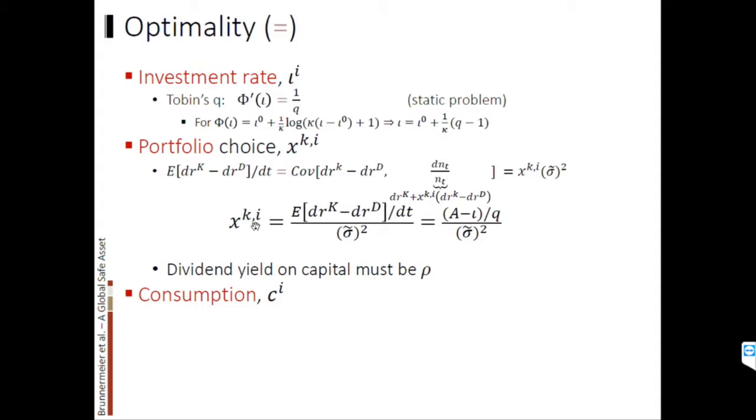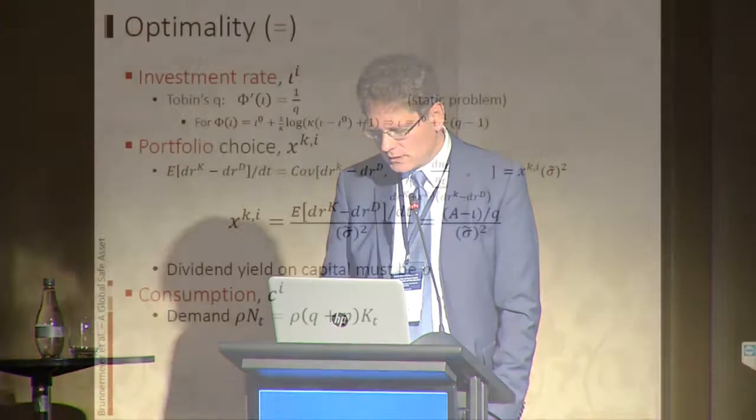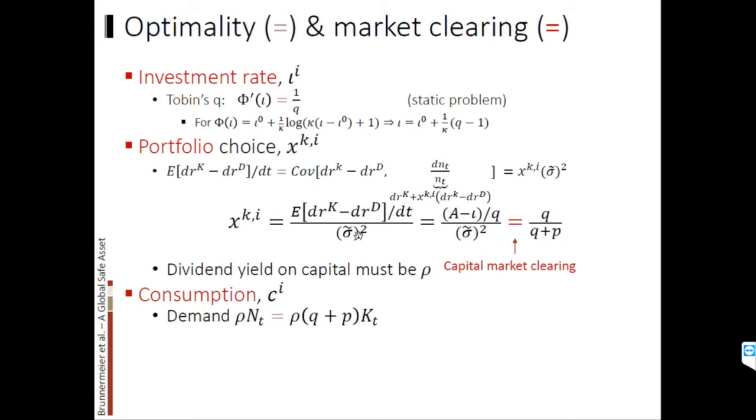The third choice is optimal consumption. With log utility and time preference rate rho, you just consume rho times your net worth. Total net worth in this economy is capital N, which consists of Q times K — the value of the machines — and P times K — the value of the safe asset. For capital markets clearing, the portfolio share everybody puts into capital must equal the supply of capital in value terms: Q times K over Q times K plus P times K. And there's goods market clearing: total supply for consumption is A minus iota times the capital stock.